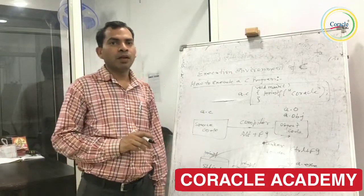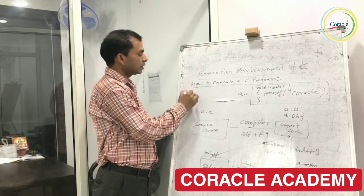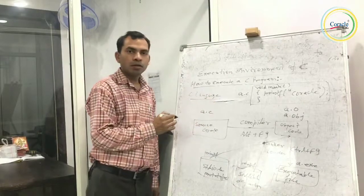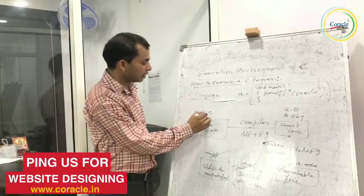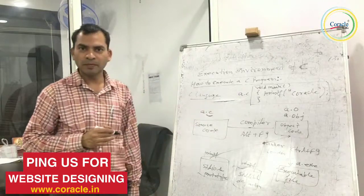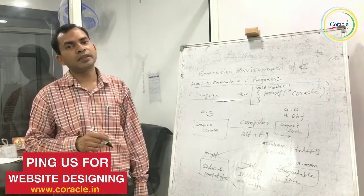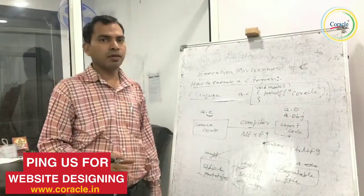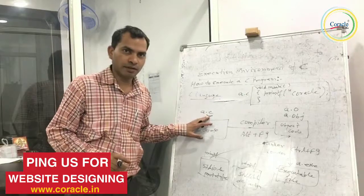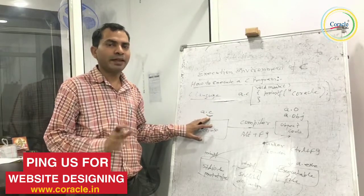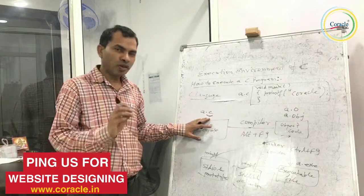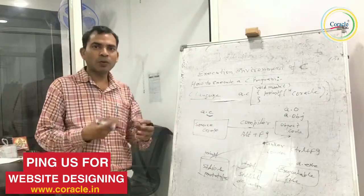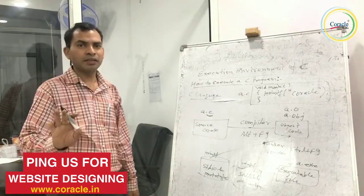First of all, we need to understand that C is a language. Whatever program we write, that is basically known as the source code. Whatever program we have designed in C language, that is called the source code.